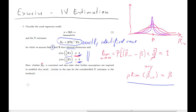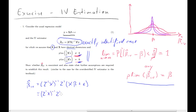We do our usual trick. We have beta hat IV equals (z prime x) inverse times z prime y. Now we replace y with our model x beta plus epsilon, substituting into the definition of the IV estimator. This immediately leads to (z prime x) inverse z prime x beta plus (z prime x) inverse z prime epsilon.